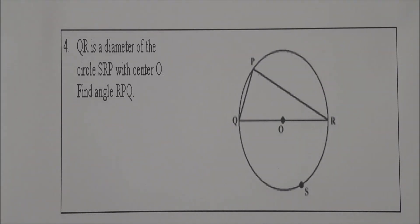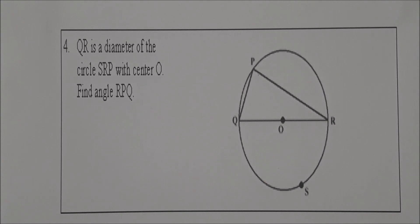Question 4. QR is a diameter of the circle SRP with center O. Find angle RPQ.